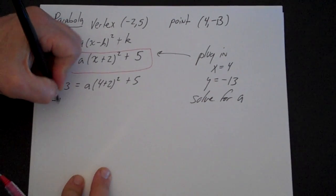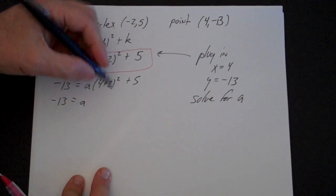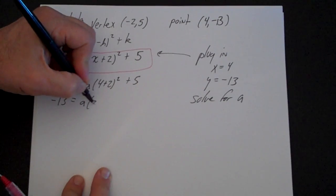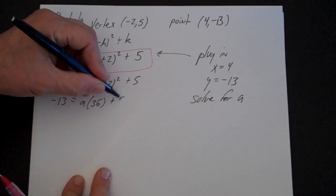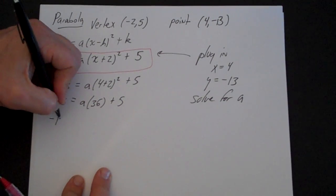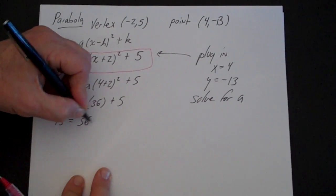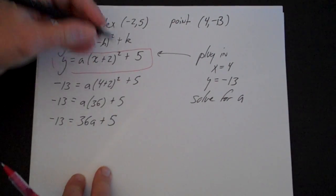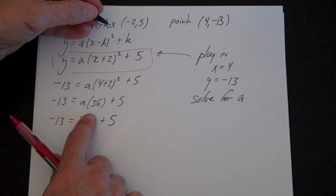That is -13 = a(6)². 6 squared is 36. So I have -13 = 36a + 5. I am simply going to solve for a.